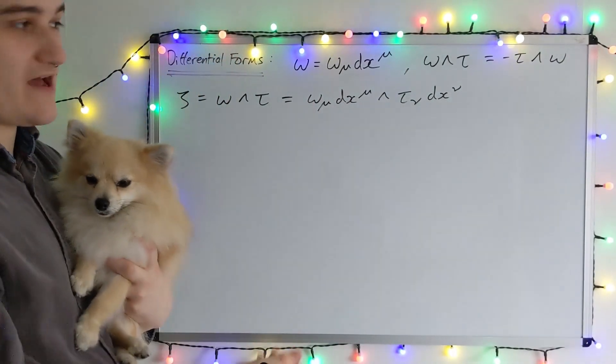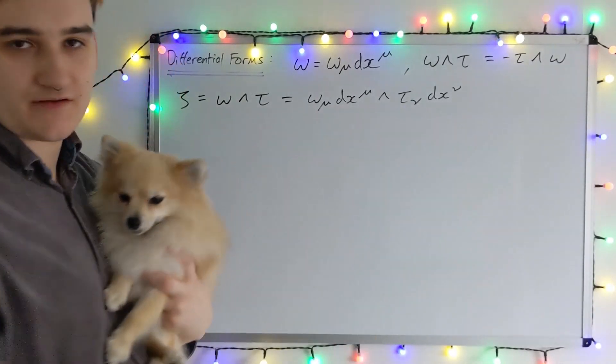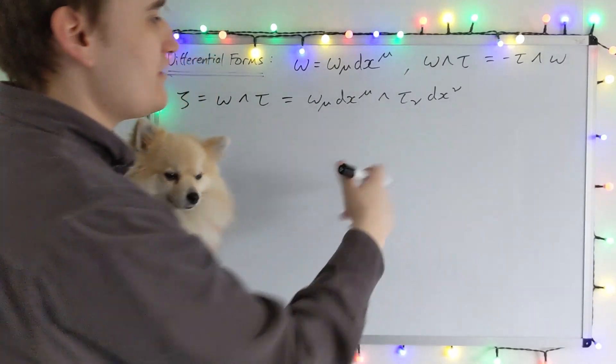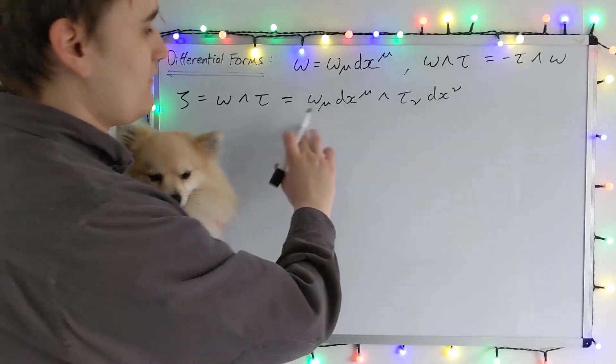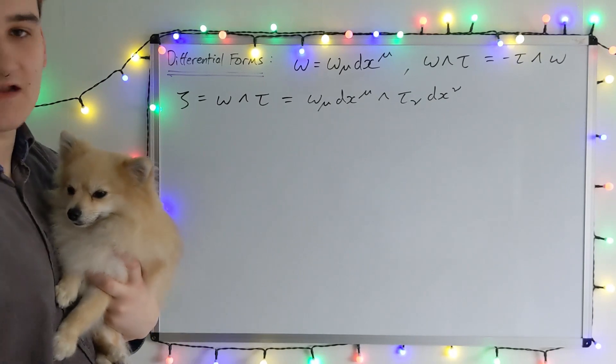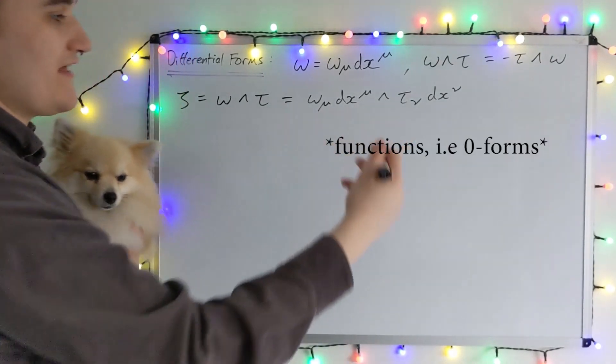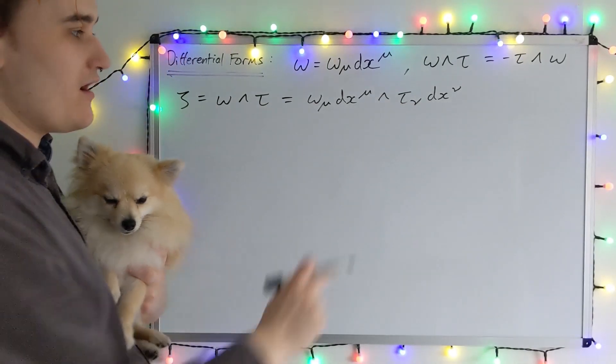Now this wedge product I haven't told you, but it has to be linear, and these components are just going to be numbers or functions if it's a one form field. I'll talk more about this later, but for now let's just treat these as being numbers or functions. They can be pulled out of the wedge product since the only kind of form part of these DXs.